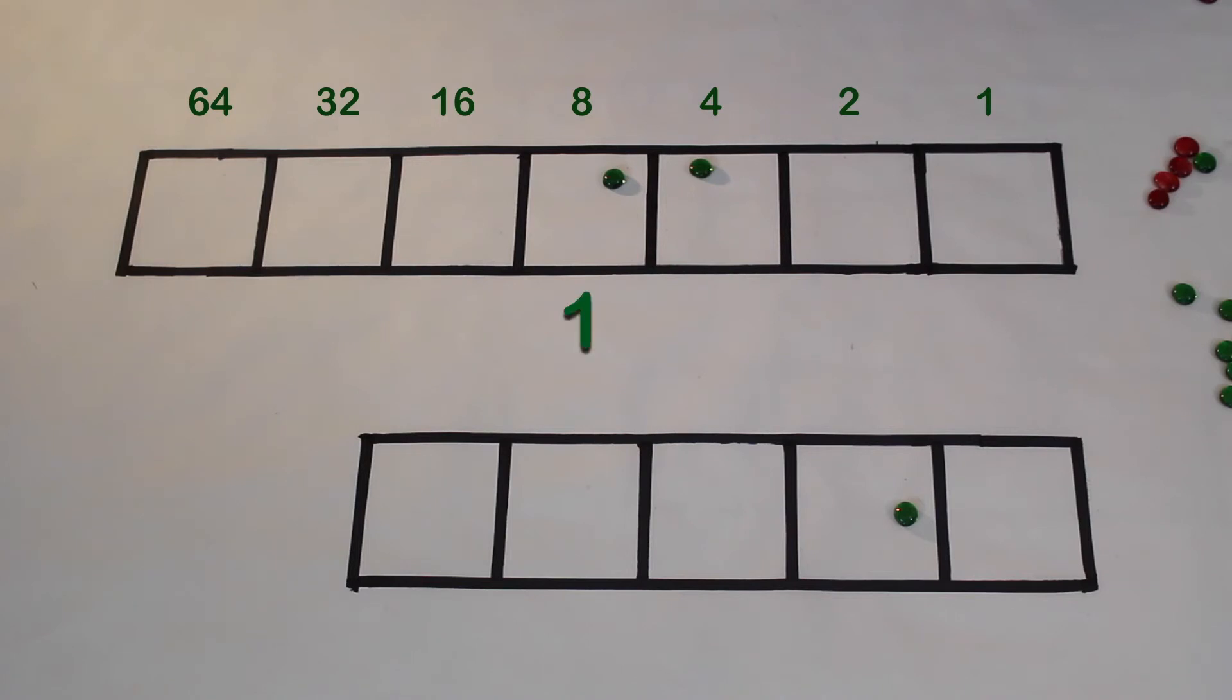So 6 times 2 is 1, 1, 0, 0. That's an 8 and a 4, which add up to 12. 6 times 2 is 12.